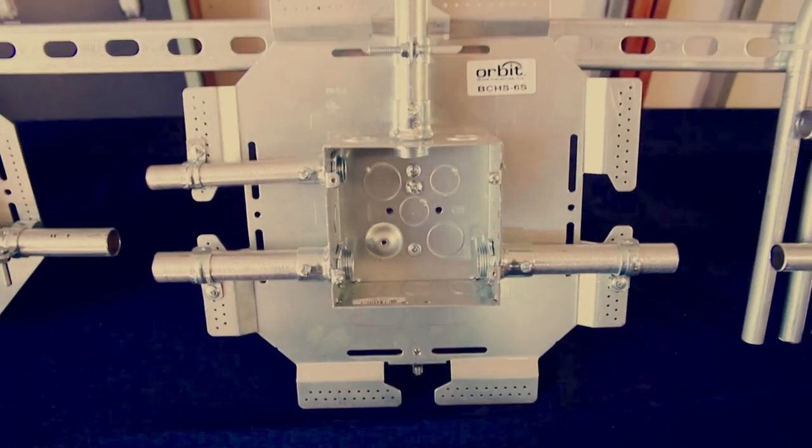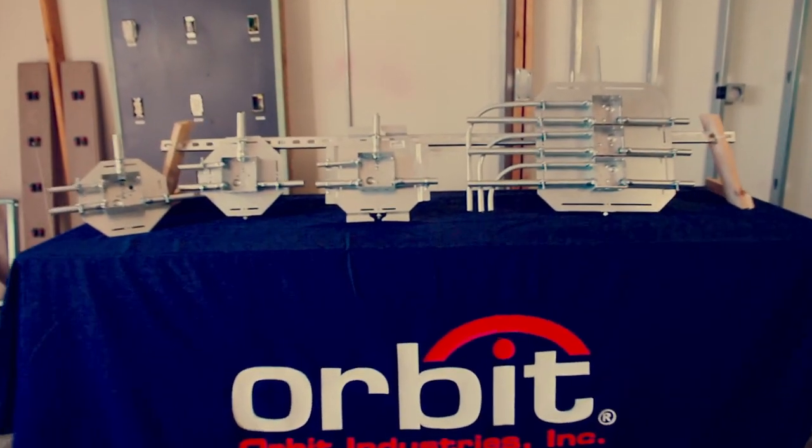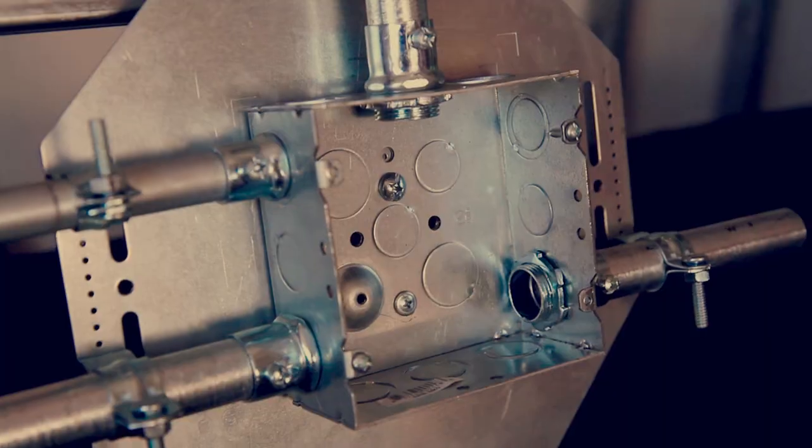As the first product of its kind, Orbit introduces the box and conduit hanger support plate. This new line of prefab plates is essential when time and safety are key to your electrical installations.